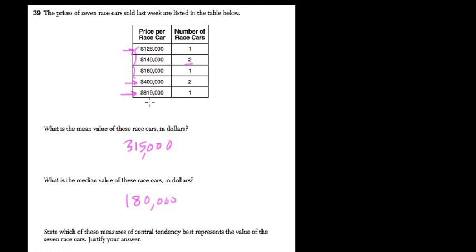Instead, I would pick the median because this outlier, the $819,000, kind of throws the mean off when you add them and divide it. The median is not thrown off by that. In fact, the median is pretty close to exactly what one of the cars is, but also pretty close to the other three cars. It is way below the other two cars.